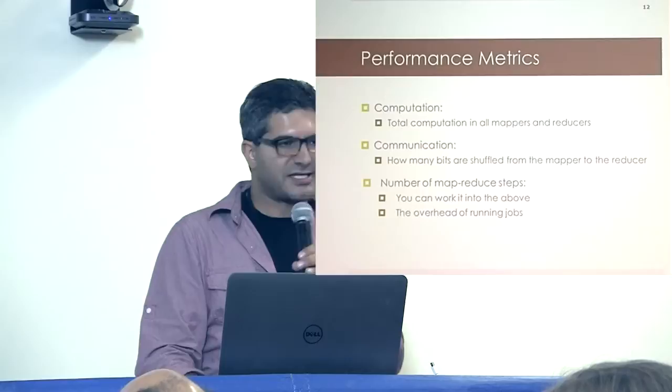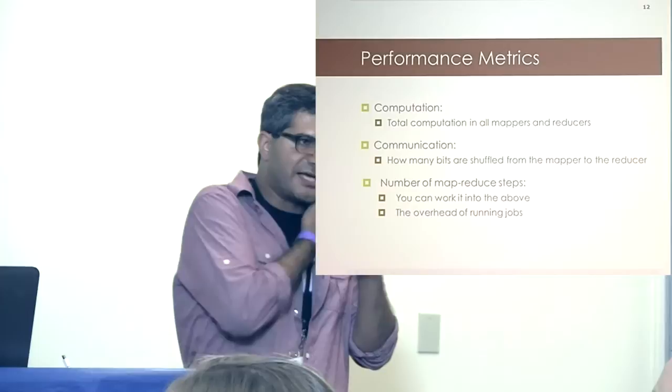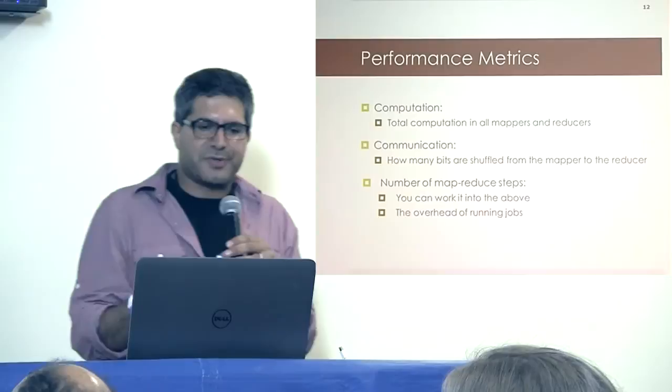What are the things we optimize for? Obviously the total computation — in the mappers and reducers you want to do as little as you have to. But communication is another term people use when analyzing performance of MapReduce jobs: how many records do we send from the mapper to the reducer? That's another metric. That's why when I created all those intermediate triangles, there would be a next round of MapReduce jobs taking each of those records and checking for an edge to exist.